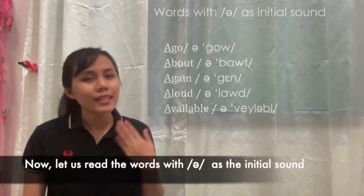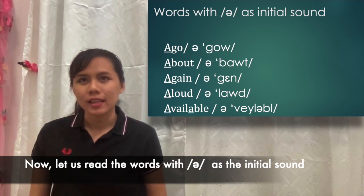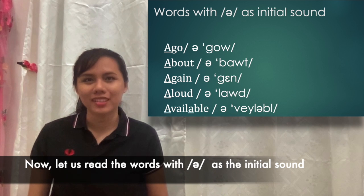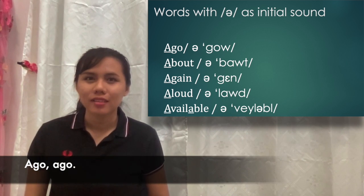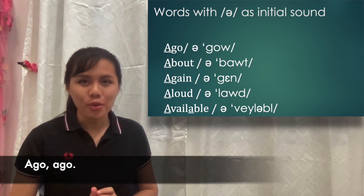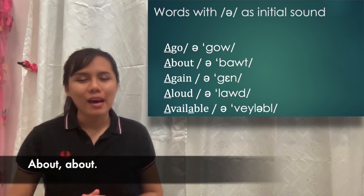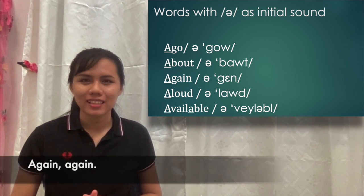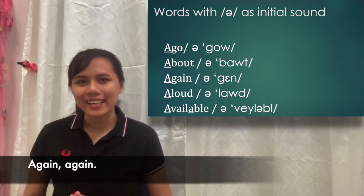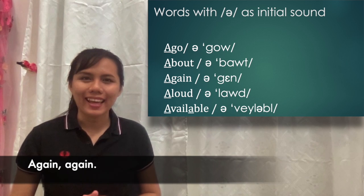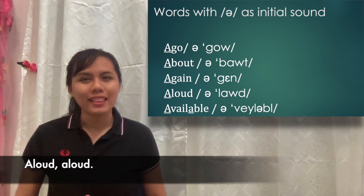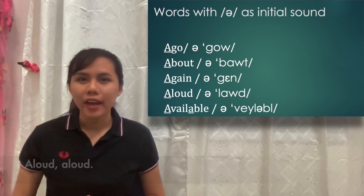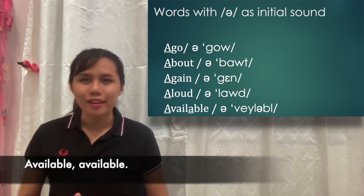Now let us read the words with schwa as the initial sound. Ago. About. Again. Allowed. Available.